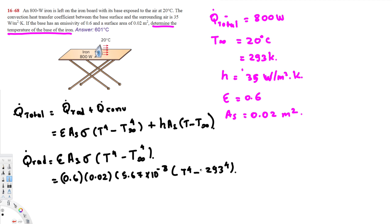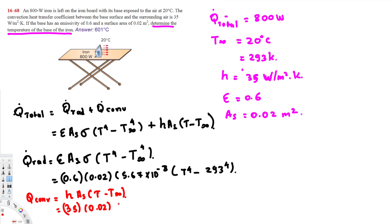Now let's create the equation for convection. Q_convection equals H times A_s times (T_surface minus T_surrounding). Here H is 35, A_s is 0.02, T_surface is what we are trying to find, and T_surrounding is 293. Adding Q_radiation and Q_convection together gives us 800 watts, as stated in the problem.